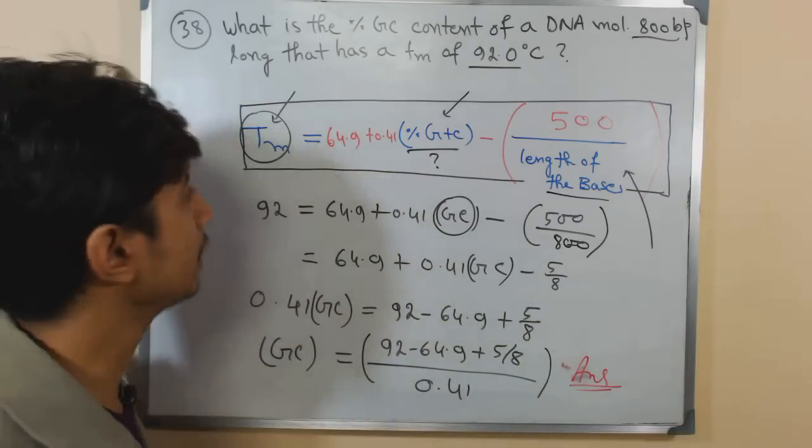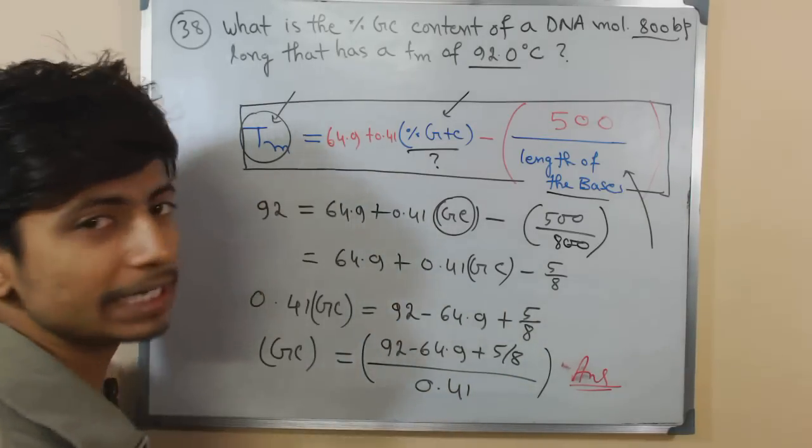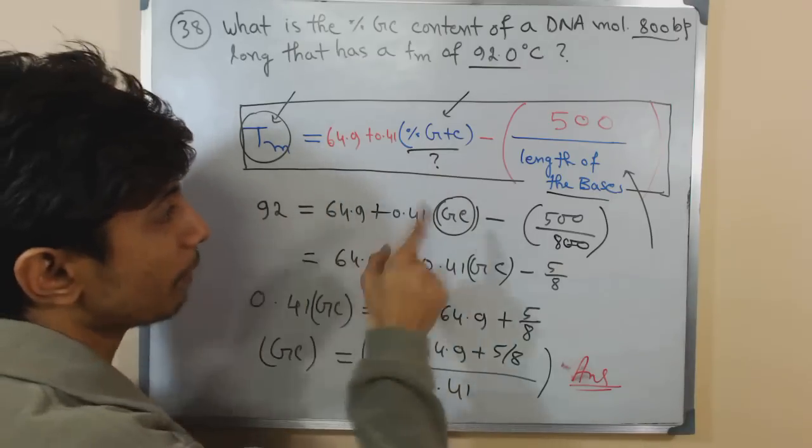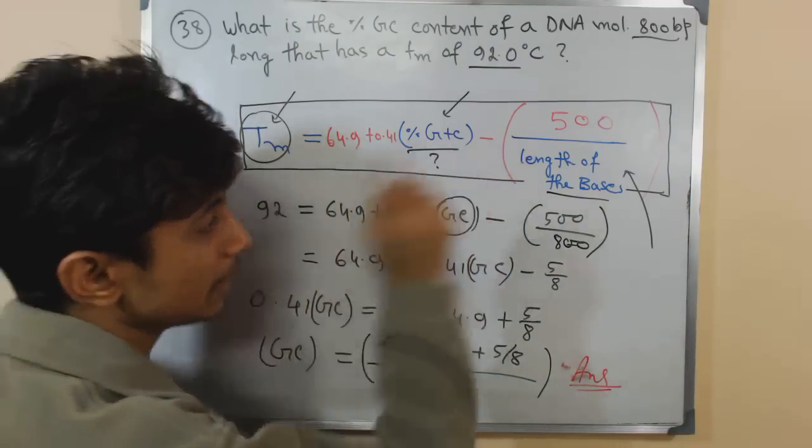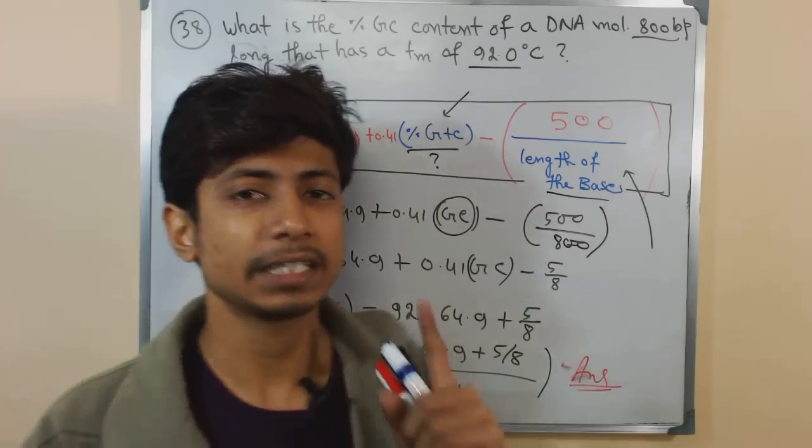Print this formula in your mind before going into CSIR exam this year: Tm equals to 64.9 plus 0.41 multiplied by GC content minus 500 divided by the length of the bases. That's it, thank you.